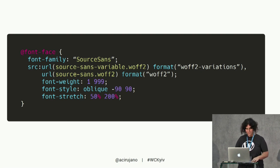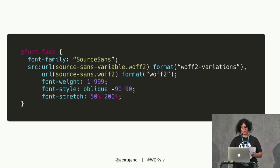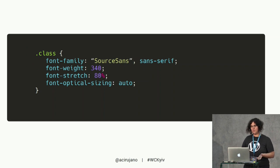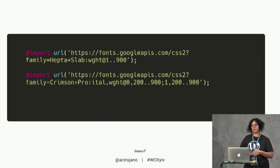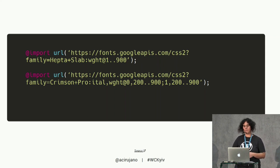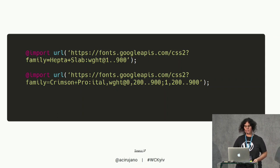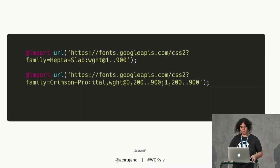We need to provide a fallback for all browsers. The main change is that we need to define a range of values — for example, we can define 200 to 600 for the font weight, and outside of this range we can't declare any value. Once you've done that, you declare the values for the properties as you usually do in CSS. You can also use Google Fonts — in beta version — but you need to declare the font family import and declare the range of values.